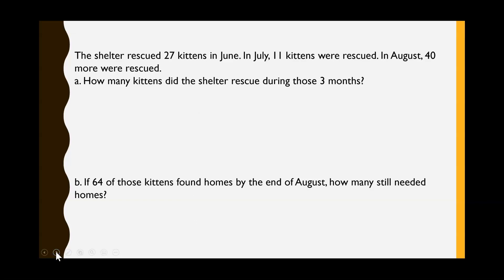Here's our application problem. Our notes say to read the problem first for word problems, so let's go ahead and read it. The shelter rescued 27 kittens in June. In July, 11 kittens were rescued. In August, 40 more were rescued. This is a two-step problem. How many kittens did the shelter rescue during these three months? Second question: if 64 of these kittens found homes by the end of August, how many still needed homes?